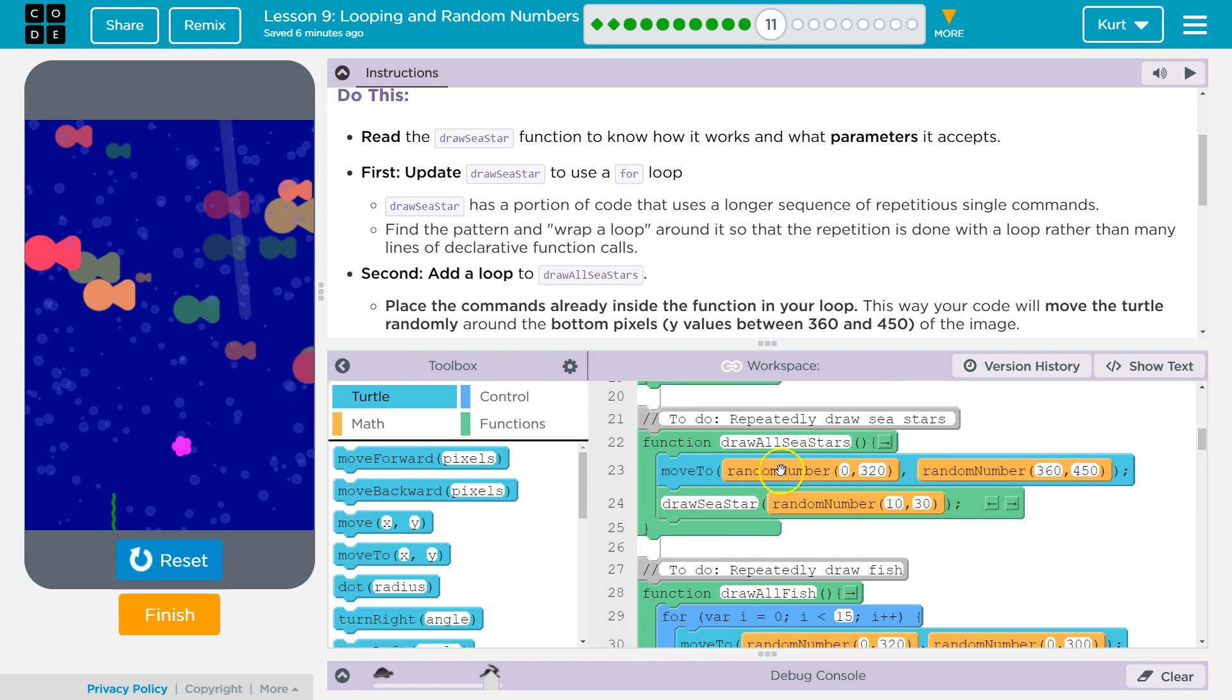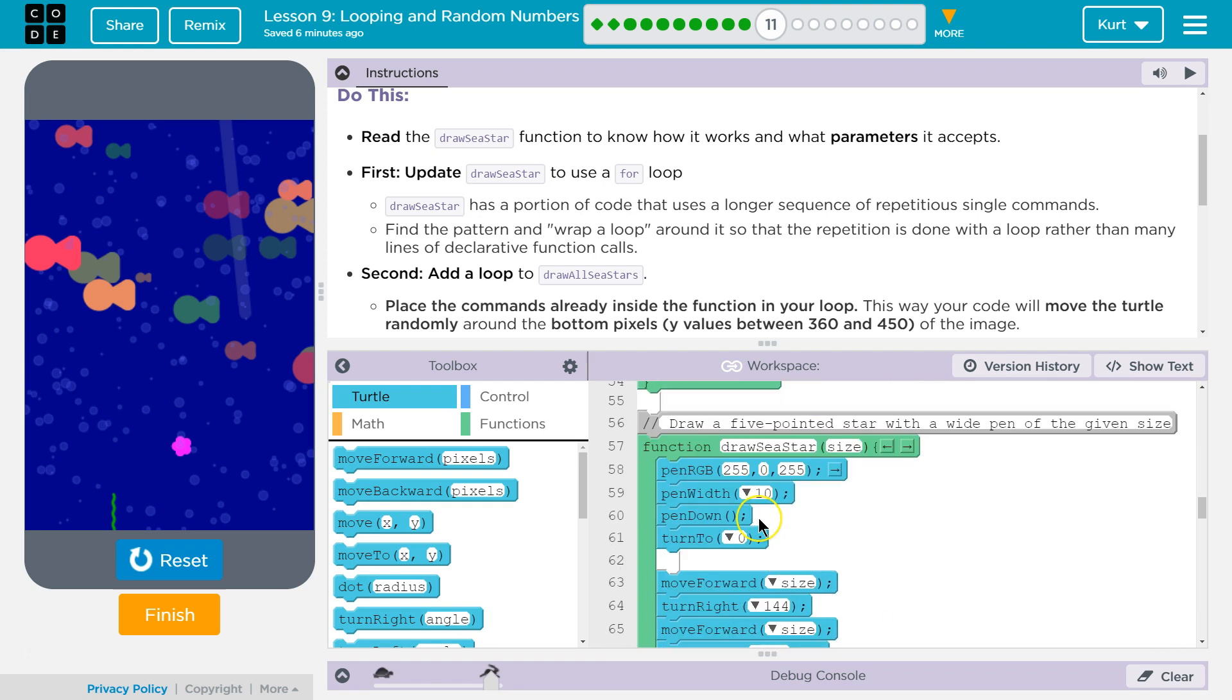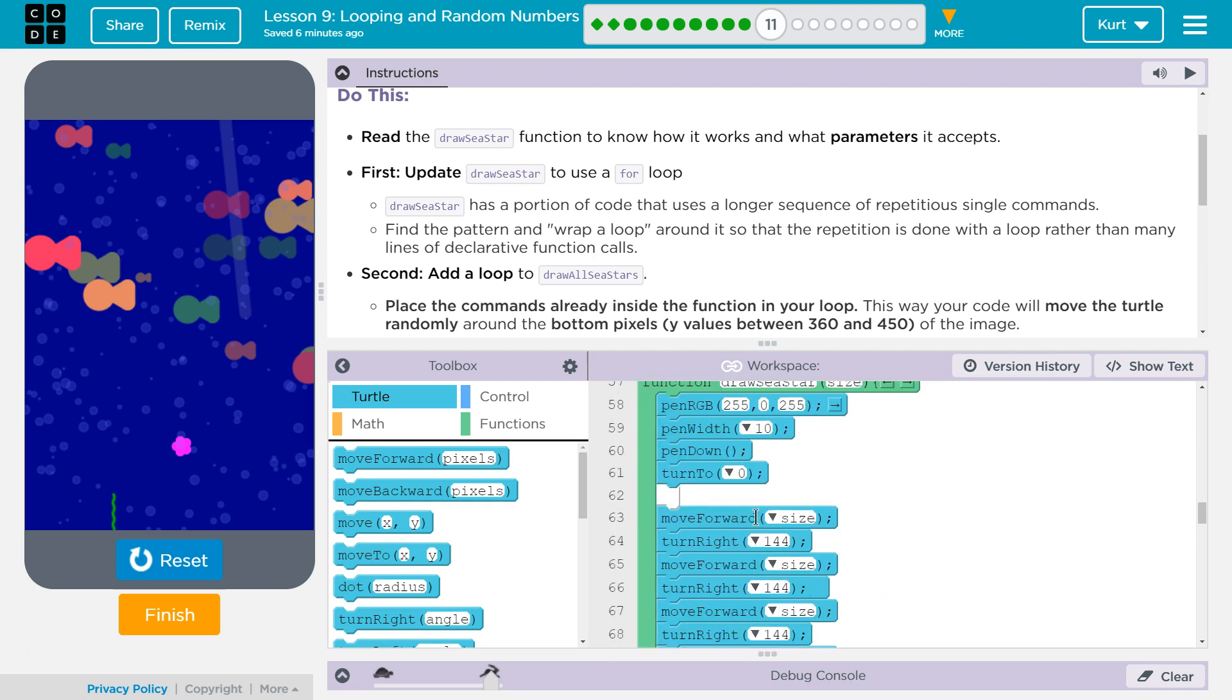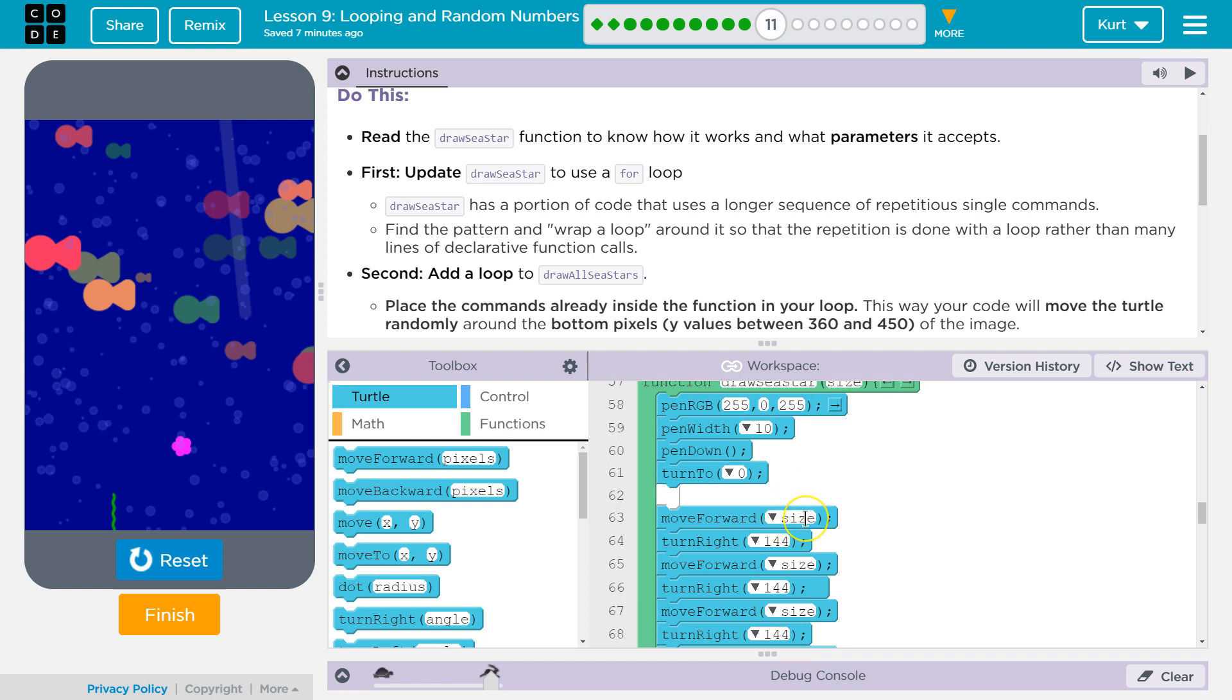So, it would move the turtle to a random position. Now, it calls Draw C-Star. And its parameter, its argument that it's going to use is between 10 and 30. So, let's just say it's 17 this time. The code, the computer then looks in the code for Draw C-Star function. And it's going to run that. Draw C-Star, which is here. And for size, it now knows, oh yeah, what was that number? Random number. Okay, it was 17 this time. Size is 17. And so, when it gets to here, Move Forward, it knows Move Forward 17 pixels.